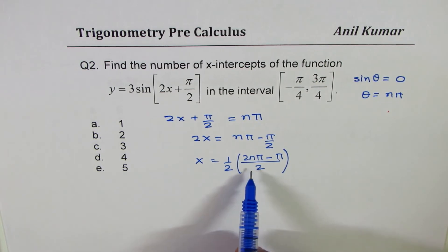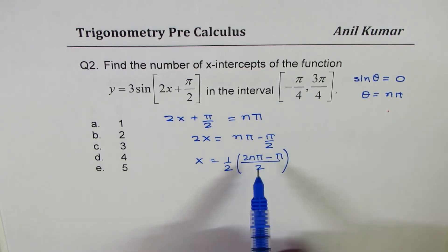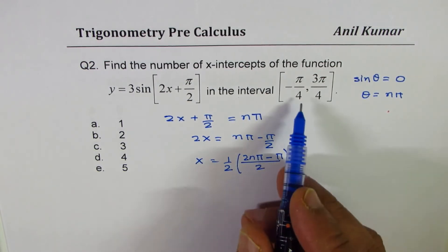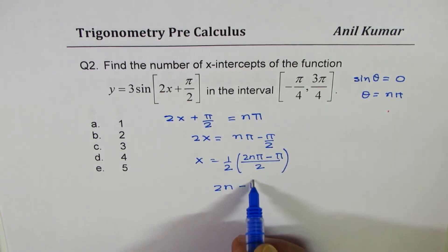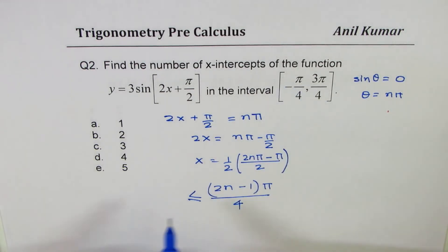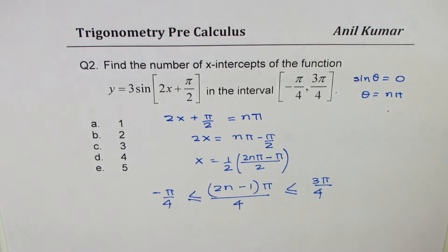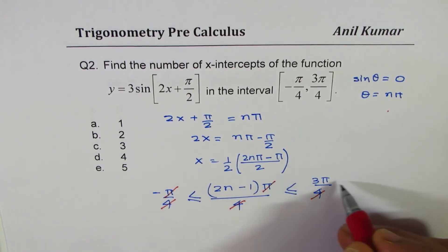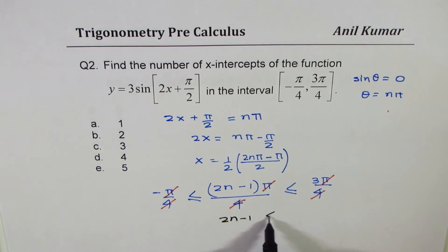This x value must lie within the interval −π/4 to 3π/4. Taking π common from the numerator gives x = (2n − 1)π/4. Substituting into the inequality: −π/4 ≤ (2n−1)π/4 ≤ 3π/4. Multiplying everything by 4/π cancels π, giving −1 ≤ 2n − 1 ≤ 3.